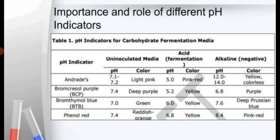The roles of different pH indicators are listed here with three columns: un-inoculated media, after acid production, and after alkaline condition. Andrade indicator: at pH 7.1–7.2 (un-inoculated), it is light pink or colorless; at pH 5 (acidic), it is pink; at pH 12–14 (alkaline), it is yellow or colorless. Bromocresol purple: at pH 7.4, it is deep purple; at acidic condition, it is yellow; at pH 6.8, it is purple. Bromothymol blue: at pH 7, it is green; at pH 6.4, it is yellow; at pH 7.6, it is deep Prussian blue.